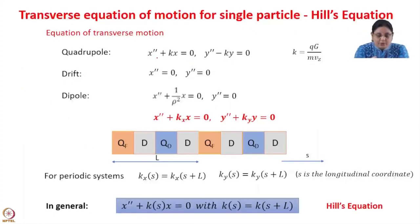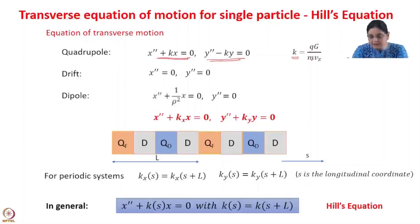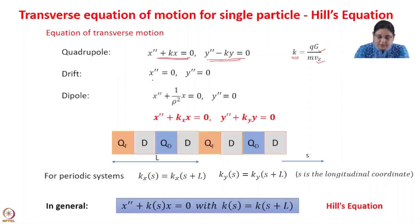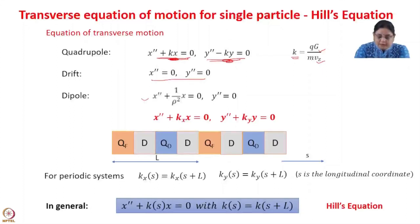In the last lecture, we derived the equation of motion for the quadrupole — this is for the focusing quadrupole and this is for the defocusing quadrupole. Here k stands for a constant given by q·g / (m·v_z), where q is the charge, m is the mass, v_z is the velocity in the z direction, and g is the gradient of the quadrupole. We can solve this to find out the trajectory of the charged particle under the influence of this type of quadrupole. Similarly, for a drift space, the equation of motion is x'' = 0 and y'' = 0 because there is no focusing or defocusing force — k equals zero — so this is the equation of motion for a particle inside a drift space, a field-free region.